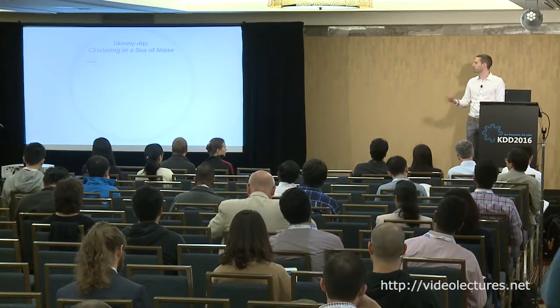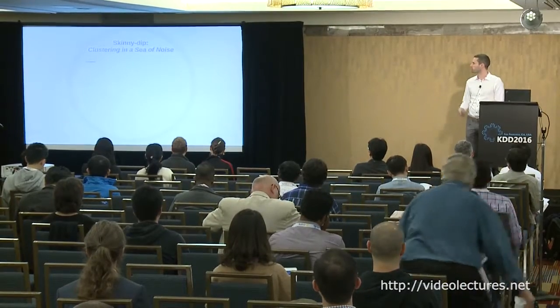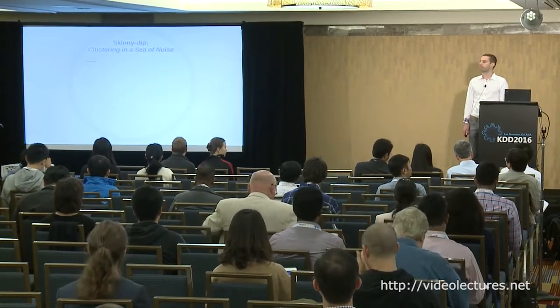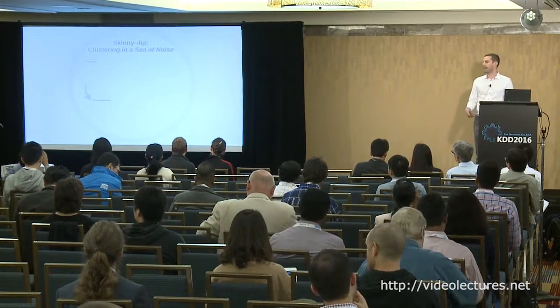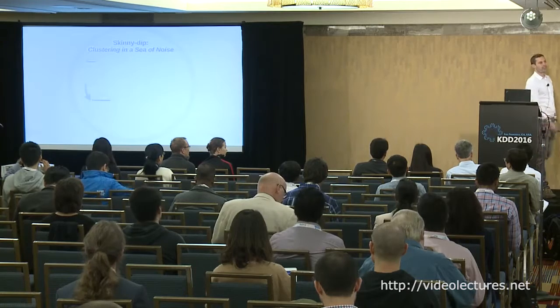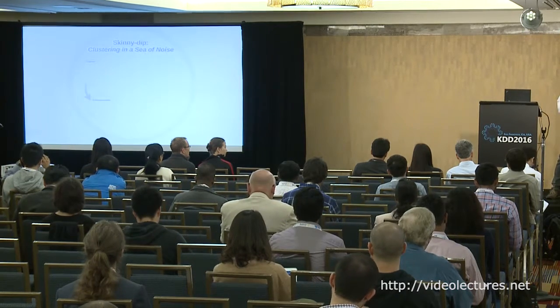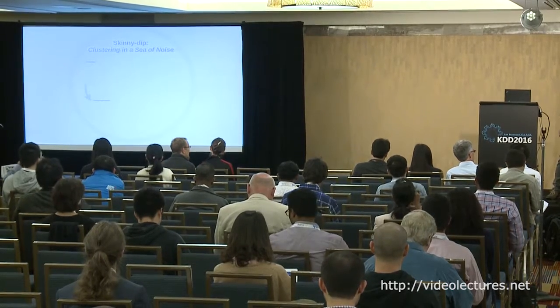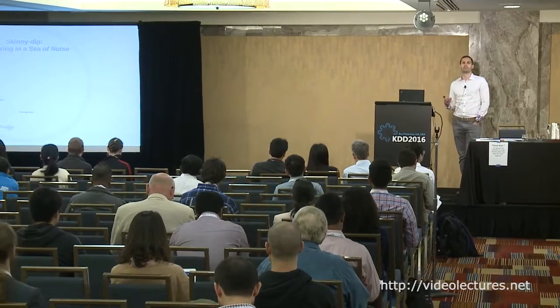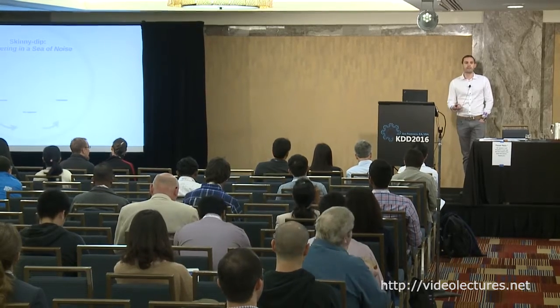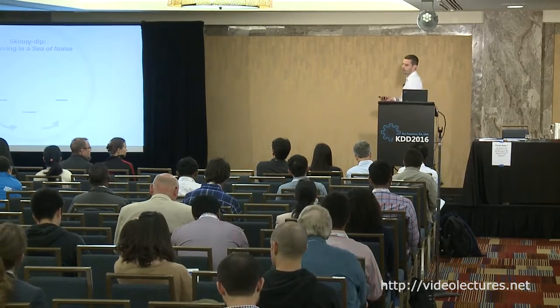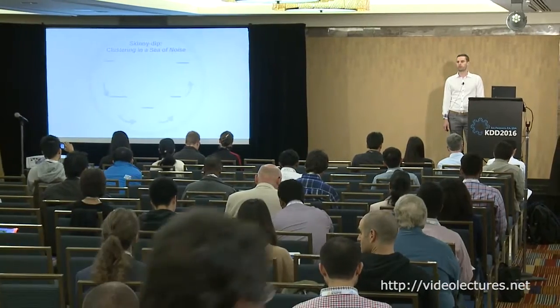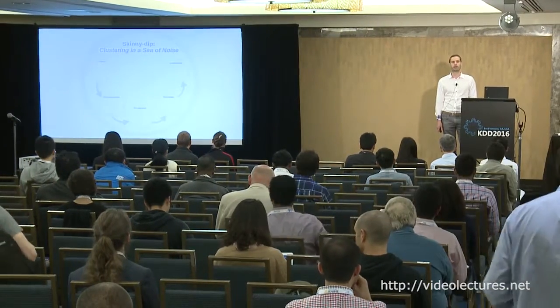I'll start with a definition of the problem, because obviously clustering is not a rigorously defined problem. We'll have a look at the sort of data on which we're focusing, then look at how existing approaches fare on that sort of data and highlight some recurring issues. We'll spend most of the time on our approach, SkinnyDip, how it works, and how it fares on the problems. Finally, we'll discuss the limitations as well as some interesting strengths of our algorithm.